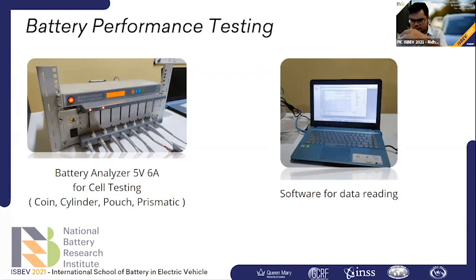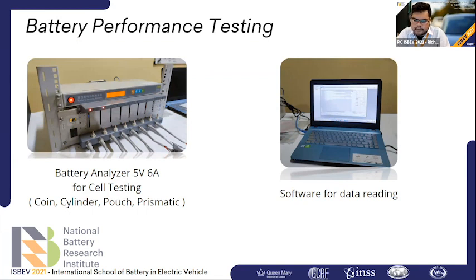At NBRI, we conduct battery performance testing. We use a battery analyzer with a specification of 5 volts and 6 amps for testing cells, which can measure coin, cylinder, pouch, and prismatic cells. The data is read using software on a laptop. Recently, NBRI also acquired a larger battery analyzer with 60 volts and 100 amps capacity, which can measure battery pack performance.